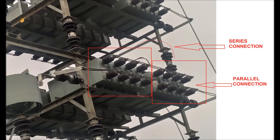How the capacitor units are connected in series and parallel combination has been shown in this figure. For one phase of one star connection, there exist eight capacitors in each phase. Four capacitors are connected in parallel combination, and another four are connected in parallel combination. These two parallel combinations are then connected in series in each phase of each star connection.